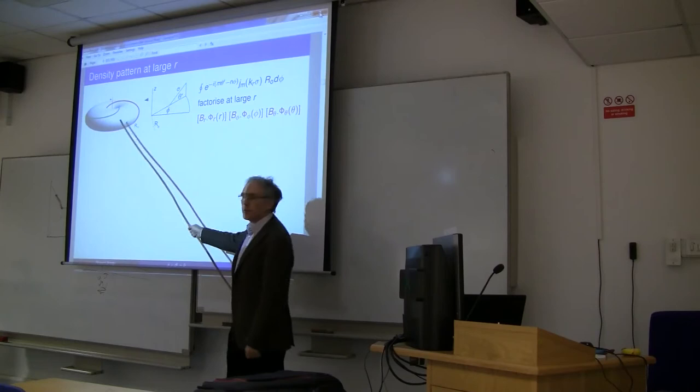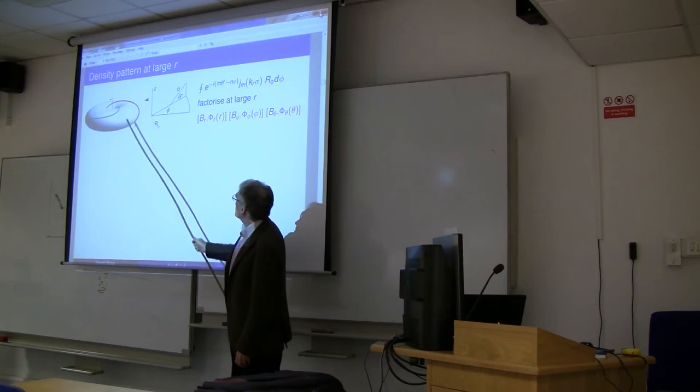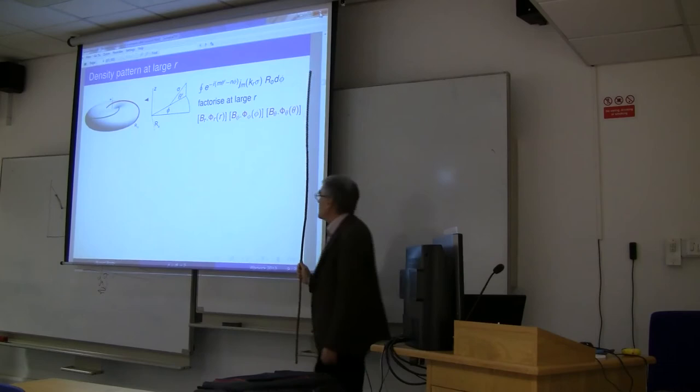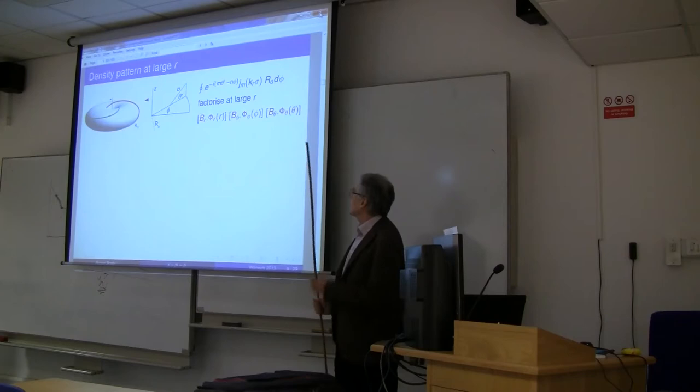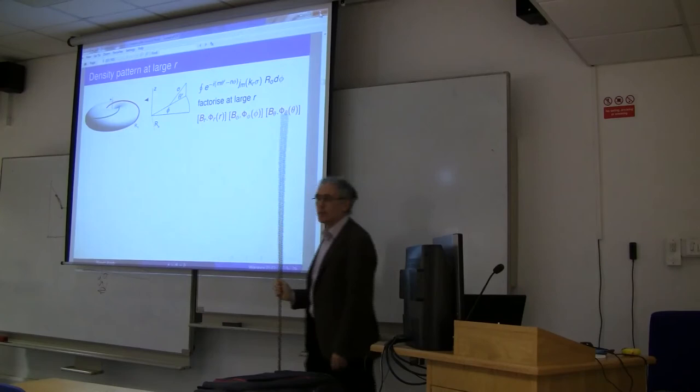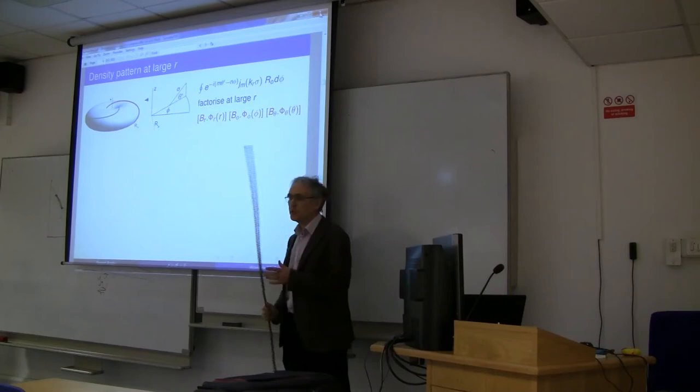Let's have a look at the density pattern. I'm going to focus on the R11 solution, which is the twisted one. This has a density pattern at large distance. What does this density pattern look like? Well, it turns out it can be factorized. It's some function of R times some function of theta times some function of phi, as you could probably see by inspection of this equation. It's a sum of spherical Bessel functions.